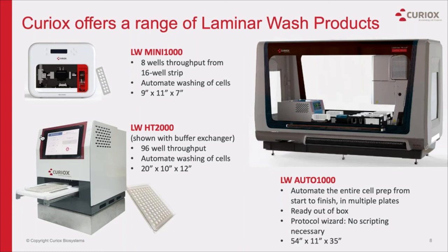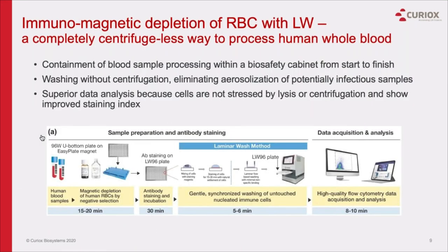In the next couple of slides, I just want to quickly highlight some data we've run with collaborators, which will complement the data that Christophe will present. In March earlier this year, we introduced immunomagnetic depletion of red blood cells in combination with laminar wash to achieve complete centrifuge-less processing of human whole blood. The 96-sample throughput method processes 100 microlitres of whole blood in approximately 15 minutes, while washing can be accomplished in less than 10 minutes on laminar wash.